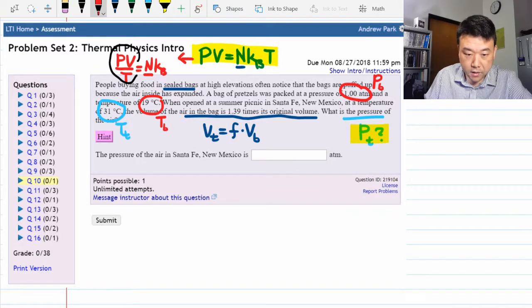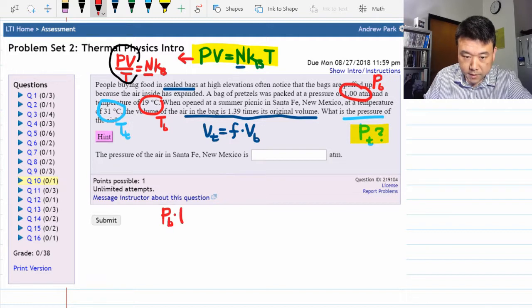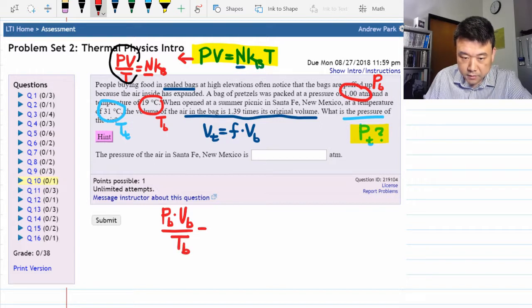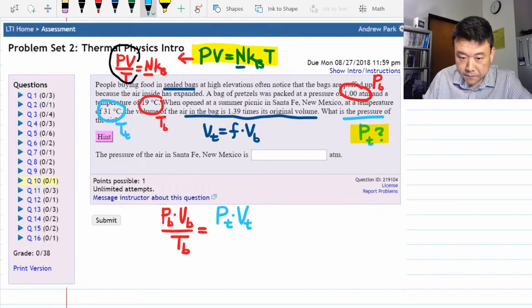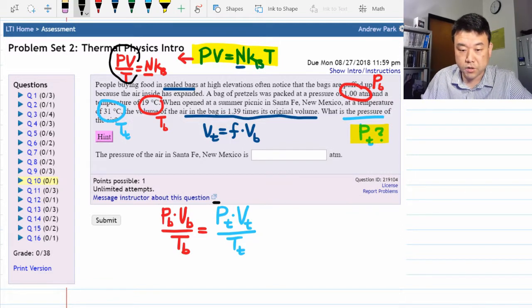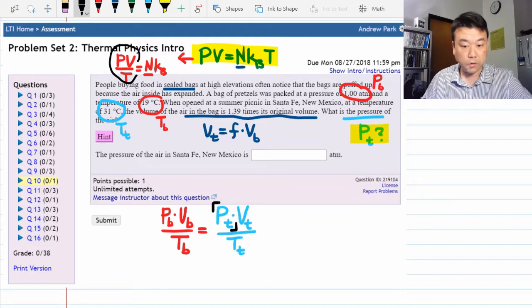So I would write down pressure at the bottom times volume at the bottom divided by temperature at the bottom is equal to pressure at the top times volume at the top divided by temperature at the top. Remember, you are being asked for pressure at the top.